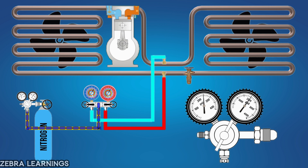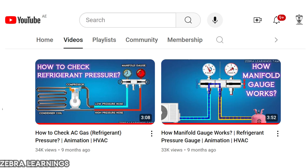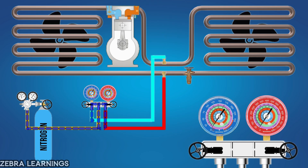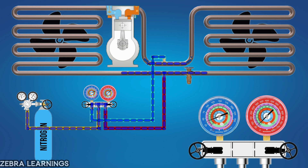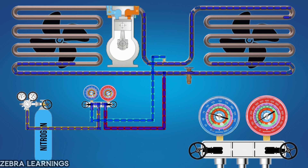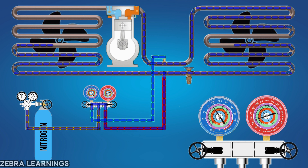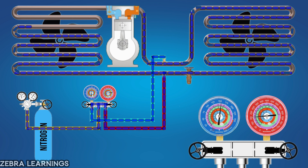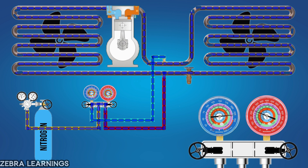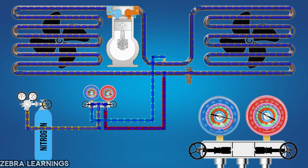Now slowly open the valves on the blue and red hoses of the manifold gauge. We have uploaded a video on our channel explaining how the manifold gauge works — the link is in the description below. Once the valve is open, it will take only a few seconds for the pressure in the AC unit to reach 250 psi. Once the pressure gauge indicates 250 psi, close the valves on the red and blue hoses. The AC unit is now pressurized with nitrogen gas at 250 psi.